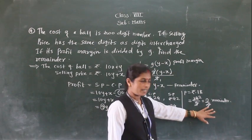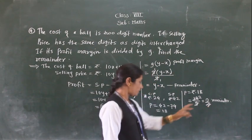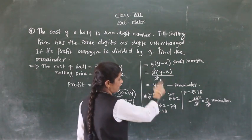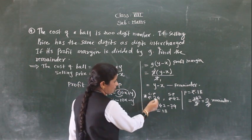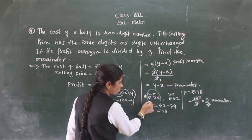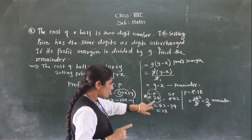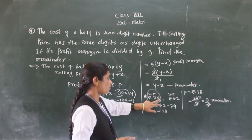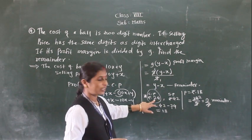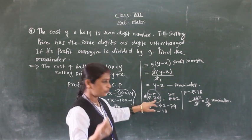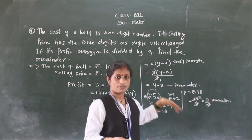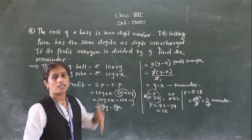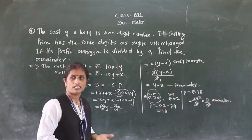You got the remainder as 2. Now check with the formula: the remainder is y minus x. In this case, x = 2 and y = 4, so y minus x = 4 minus 2 = 2. Correct — verified. So in this way you have to solve sums that depend upon 2-digit or 3-digit unknown numbers.